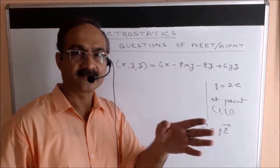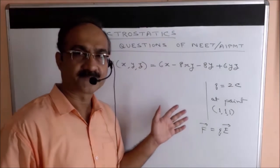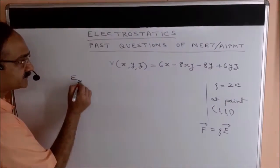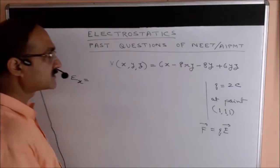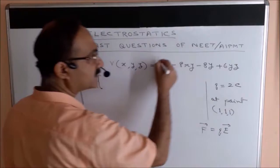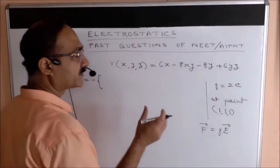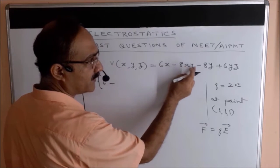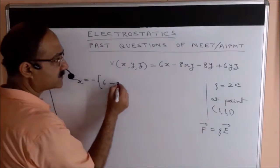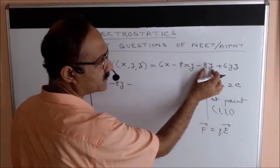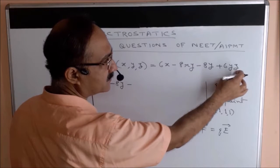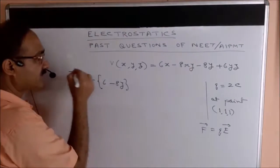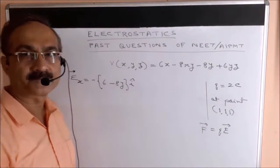If you can find the electric field from here, pause this video and proceed; otherwise, keep watching. To find the electric field, the x-component is given by Ex = −∂V/∂x. Performing the partial differentiation with respect to x: the first term gives 6, the term with y (treated as a constant) gives −8y, and the remaining terms become 0. This gives us the Ex component, written in vector form with î.